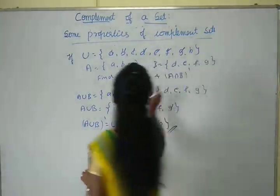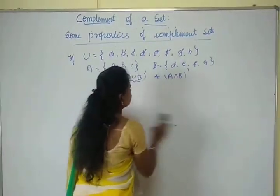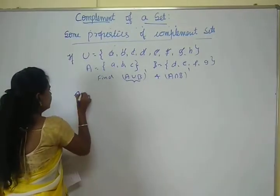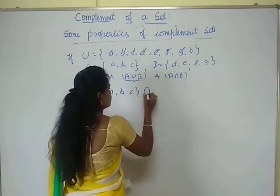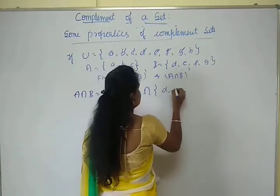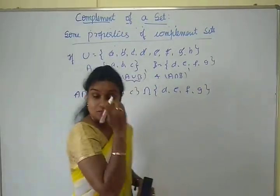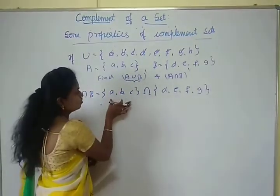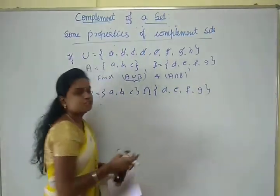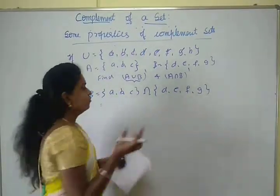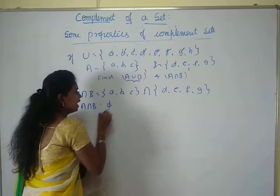Similarly, find A intersection B whole dash. For this, first find A intersection B. A is {A, B, C} and B is {D, E, F, G}. Intersection means the elements common to both sets. There is no common element in A and B, so A intersection B is equal to the empty set.